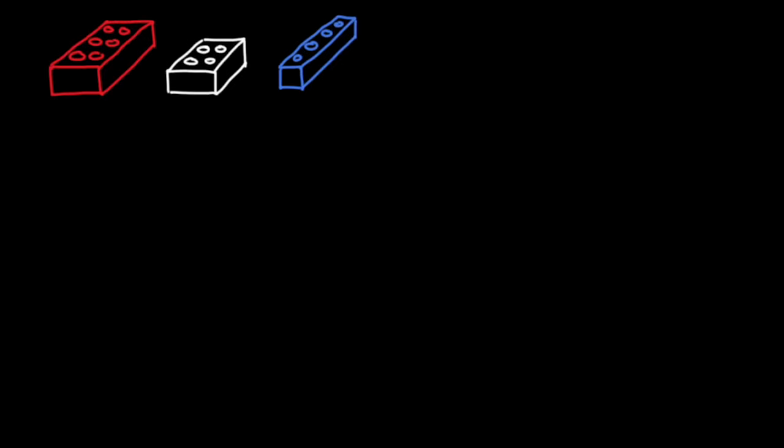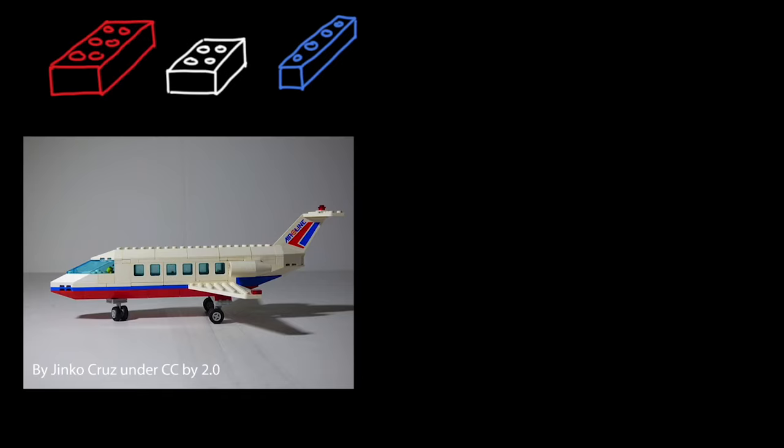So going back to our comparison between building blocks and cells, specialized cells are like different building blocks of different sizes, shapes, and colors. And these different blocks can come together to build something larger, like this airplane here.